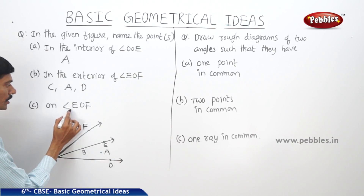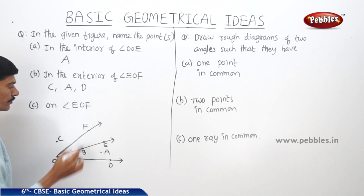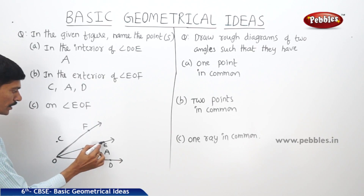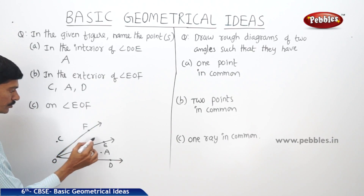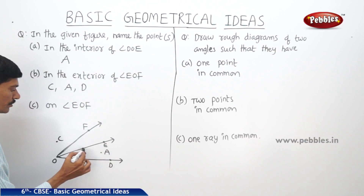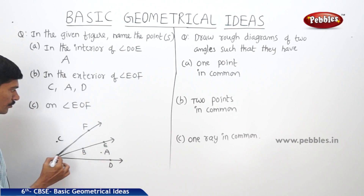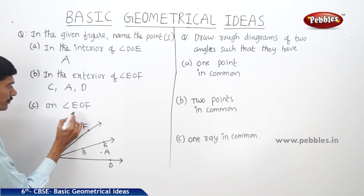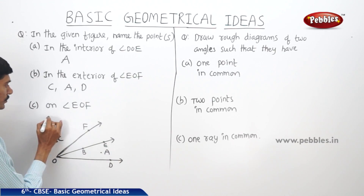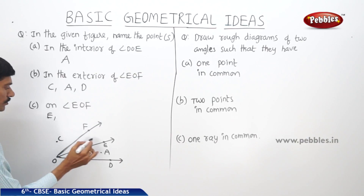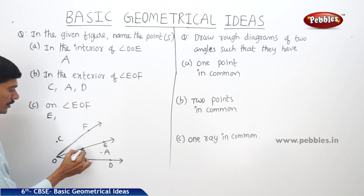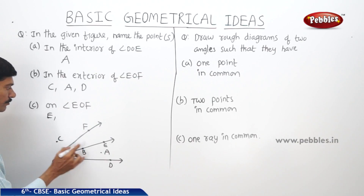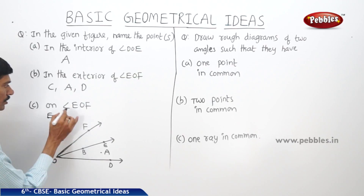Now, on angle EOF. We can write E, B, O, F. So these four points E, B, O, F are the four points on angle EOF.